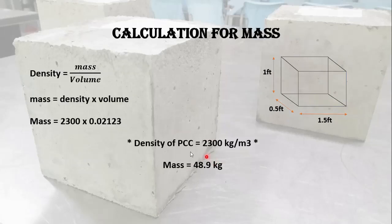Now calculate the mass of concrete. For that, use the simple formula: density equals mass per unit volume, so mass equals density multiplied by volume. As I said, this example is about plain cement concrete, so the density of PCC is 2300 kg/m³ multiplied by the volume to get the mass, which is 48.9 kg for this particular block.